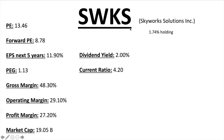Skyworks Solutions, ticker SWKS, has just under 2% holding in the ETF. PE ratio 13.46, Forward PE 8.78 — good potential for the next four quarters of earnings. EPS next five years 11.90%, PEG ratio 1.13 — solid. Gross margins just under 50%, profit margins just over 25%, operating margins 29.10% — solid all around with the margins. Market cap $19.05 billion, dividend yield exactly 2%, current ratio 4.20 — a ton of assets.